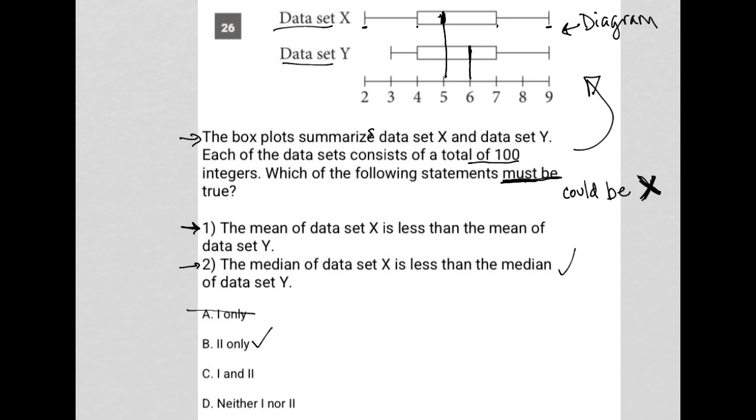C says one and two. Again, I think the mean of data set X could be less than the mean of data set Y. There's just not enough information for me to be able to know that for sure. So I'm going to say choice B is correct, and C is gone. And obviously also D is gone.